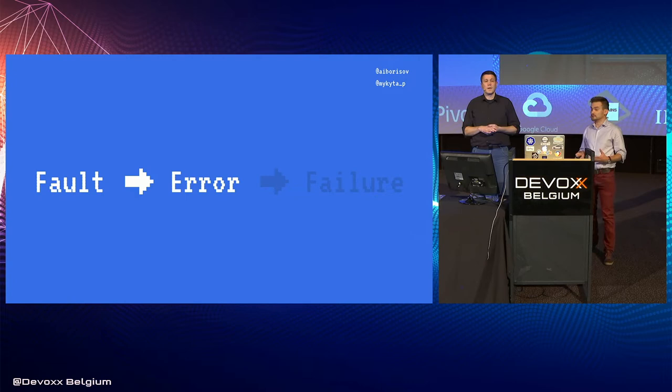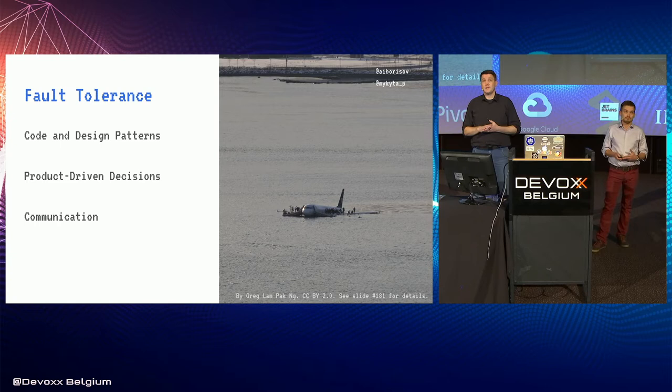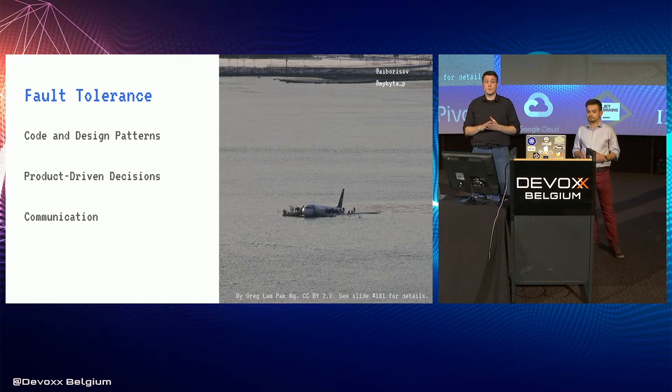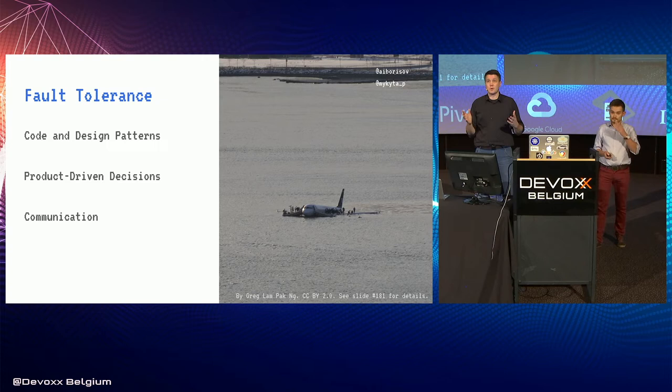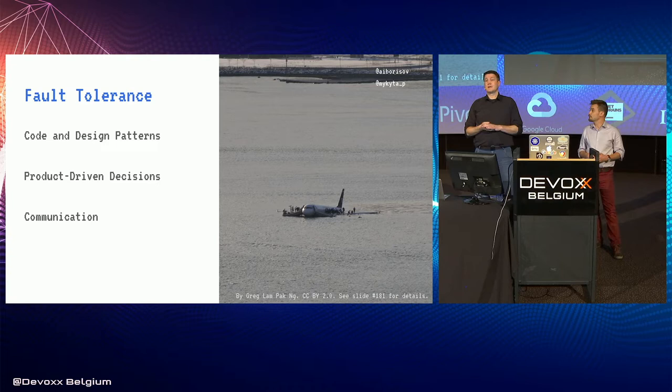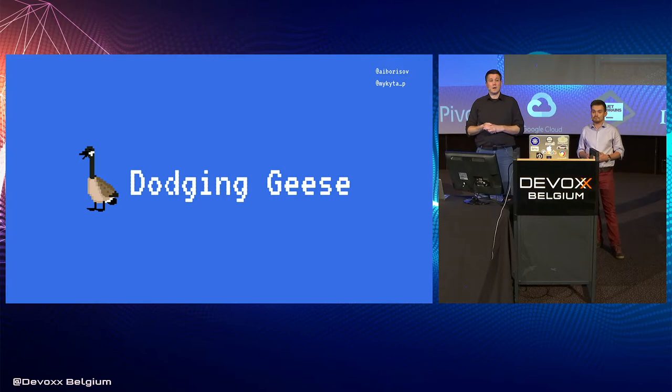Fault tolerance requires several things: right code practices, choosing business priorities, and maintaining a proper communication culture. We're going to cover those topics — talking about design patterns and illustrating them with code snippets. We're actually going to review an application we wrote, run it live, breaking it and fixing it as we go. And finally, we'll cover some communication patterns that help us maintain fault-tolerant systems.